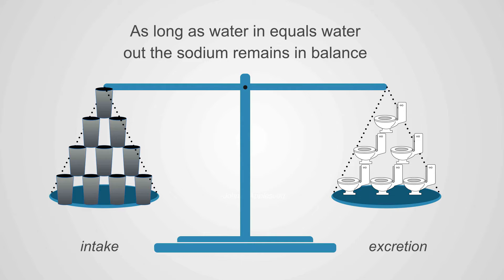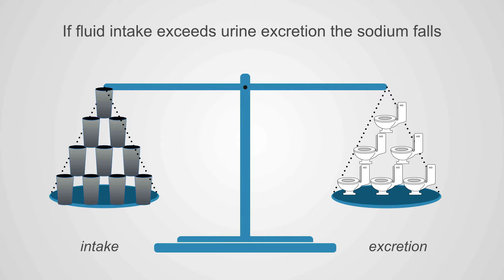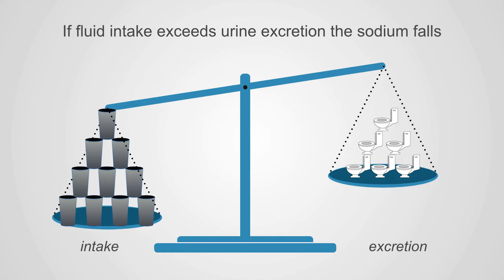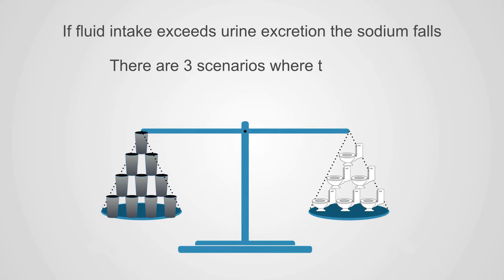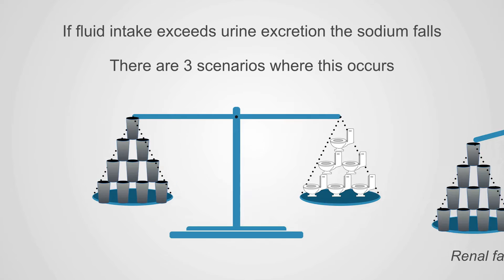Hyponatremia is due to more water intake than excretion. As long as water intake equals water out, sodium remains in balance. If fluid intake exceeds urine output, sodium falls.